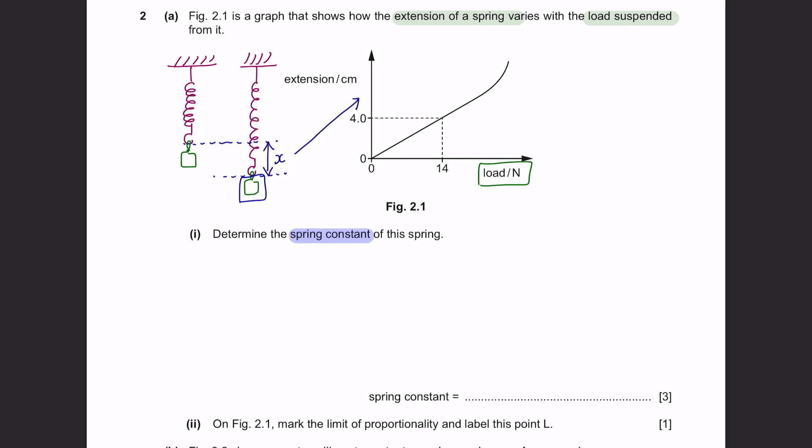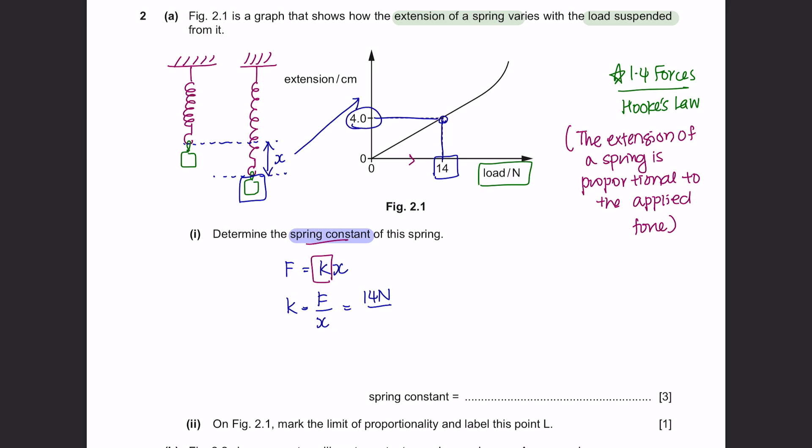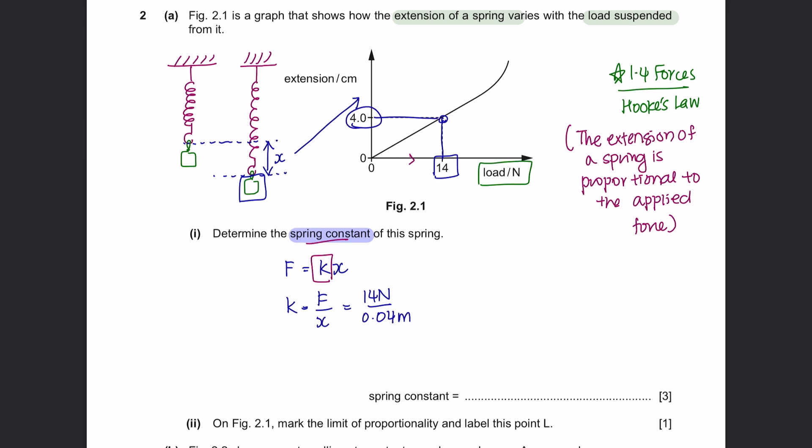Part 1: Determine the spring constant of this spring. Under the chapter of 1.4 forces, you will learn about Hooke's law. Hooke's law states that the extension of a spring is proportional to the applied force, meaning that as the load increases, the spring will extend further. And the formula of Hooke's law is force equals spring constant times extension. You are asked to calculate spring constant, which is the value of k. So the force applied here is 14 newtons. And at 14 newtons, the spring extended 4 centimeters, which converted into meters is 0.04, and you will get a spring constant of 350 newtons per meter.